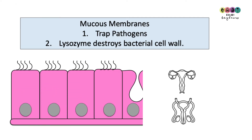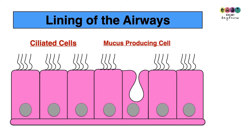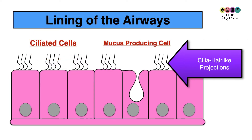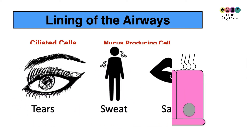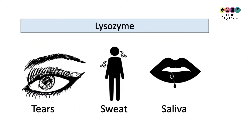The lining of your airways is also lined with ciliated cells — cells that have hair-like projections called cilia. The cilia waft mucus and trapped pathogens upwards to your pharynx, your throat, where the mucus is swallowed and the pathogens are then dealt with by hydrochloric acid in your stomach.